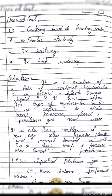Coal is used for cooking food, heating water, producing electricity in thermal power plants, in the railway department, and in brick industries. Regarding the types of coal — lignite, anthracite, peat — different types of coal were discussed in 7th and 8th standard.